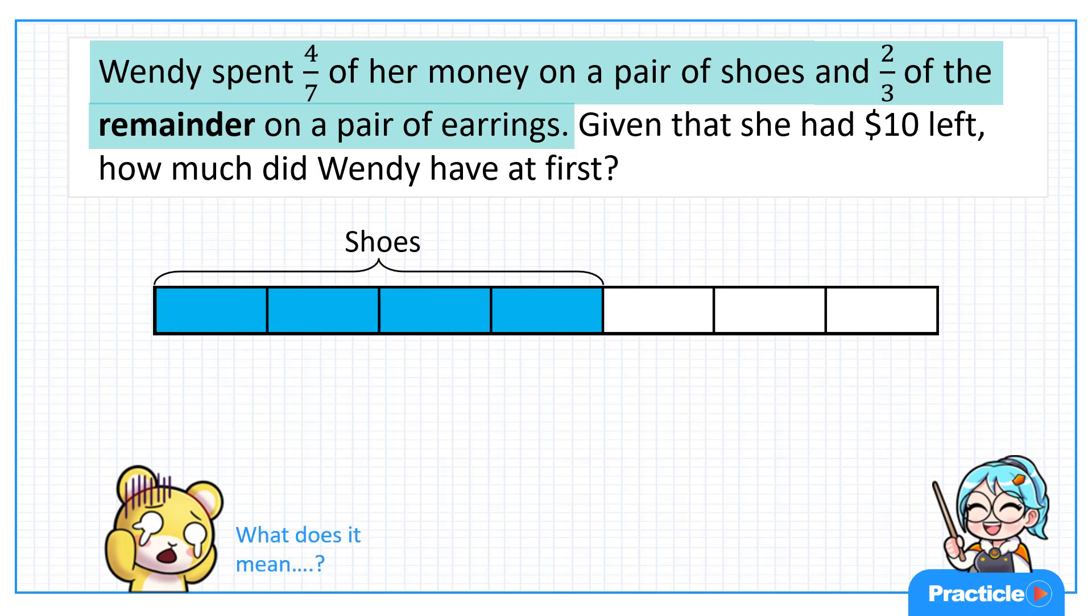Earlier on, we looked at 4/7 of Wendy's money. However, although we also have a fraction of a set over here, do you notice that we are not looking at two-thirds of Wendy's total amount of money?